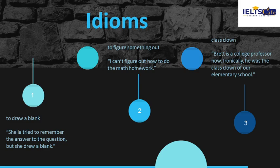Now we are going to do a few idioms. Today I am coming up with a mixture of words and idioms so that we can build a connection for the upcoming week. The first idiom is 'to draw a blank,' and its meaning is to not be able to remember something. For example: Sheila tried to remember the answer to the question, but she drew a blank. Try to make your own sentences after your revision.